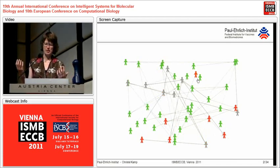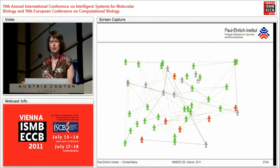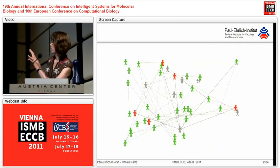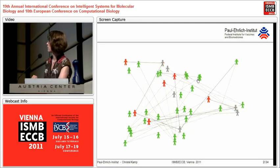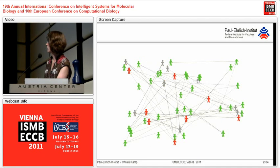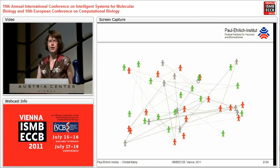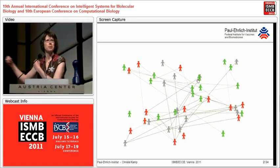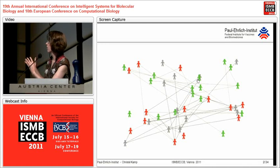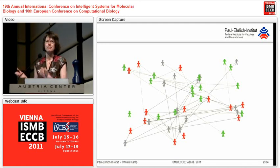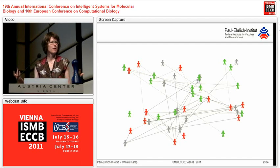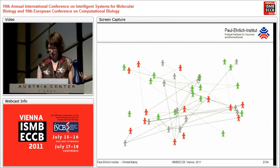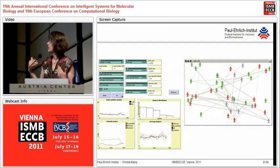If you look at epidemic processes, things might look quite convoluted and complex. If you look at this network of people, you have the green ones which are susceptible to infection, the red ones being infected, and the gray ones which have recovered. But aside from going through these different states of disease, people enter the population, people leave the population, and people change their contacts.